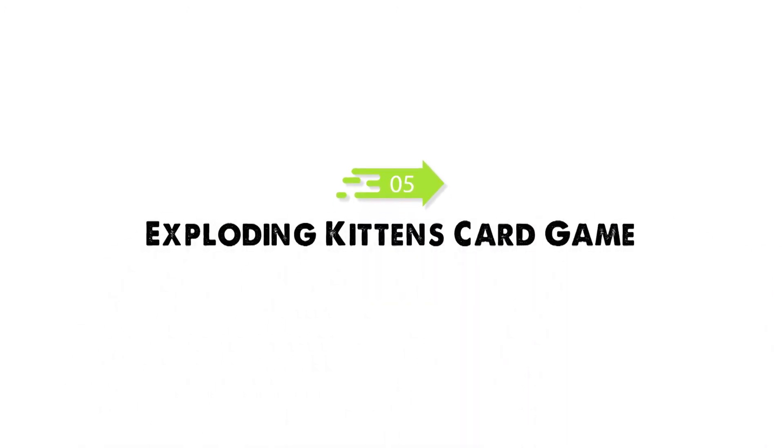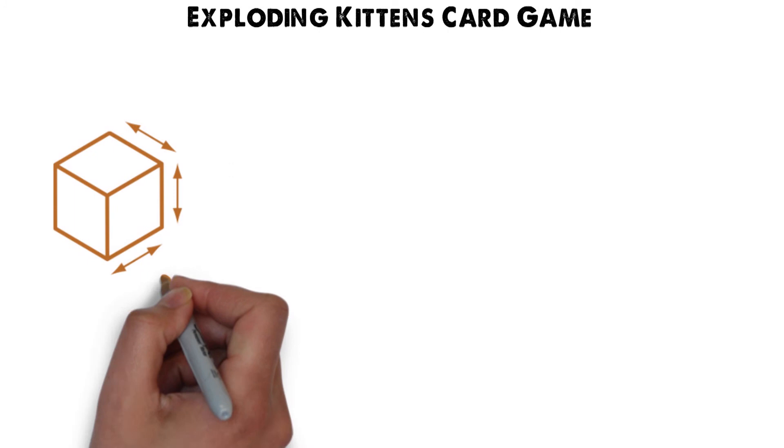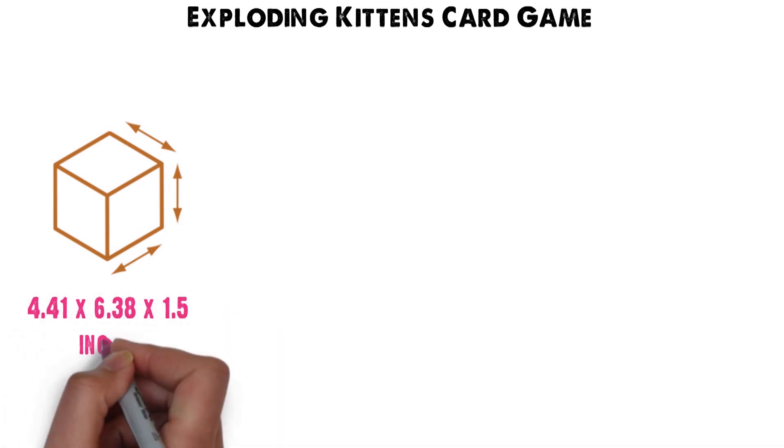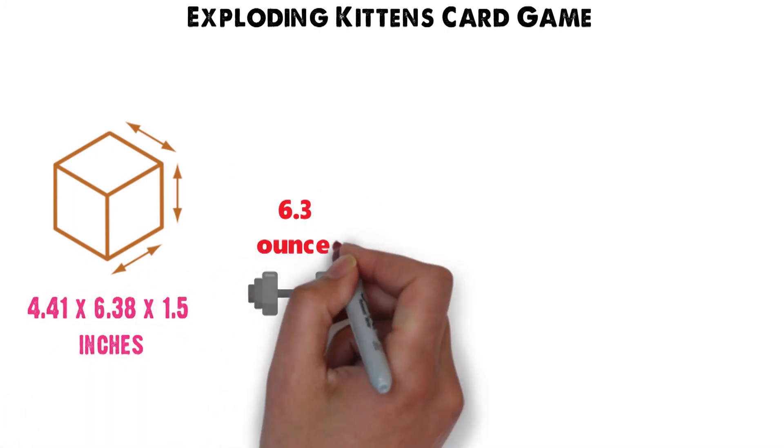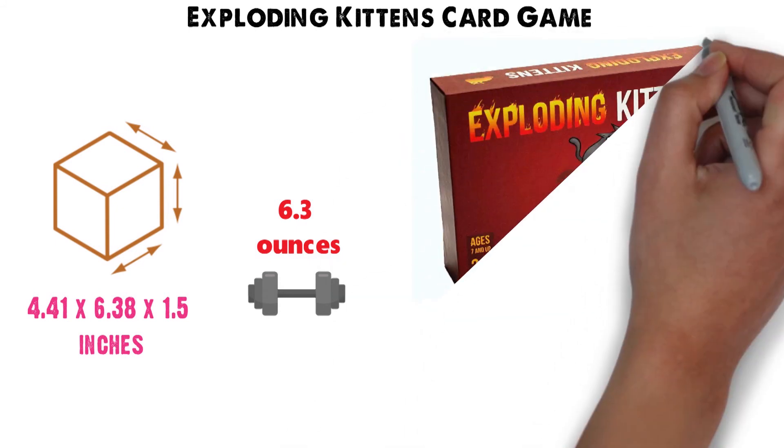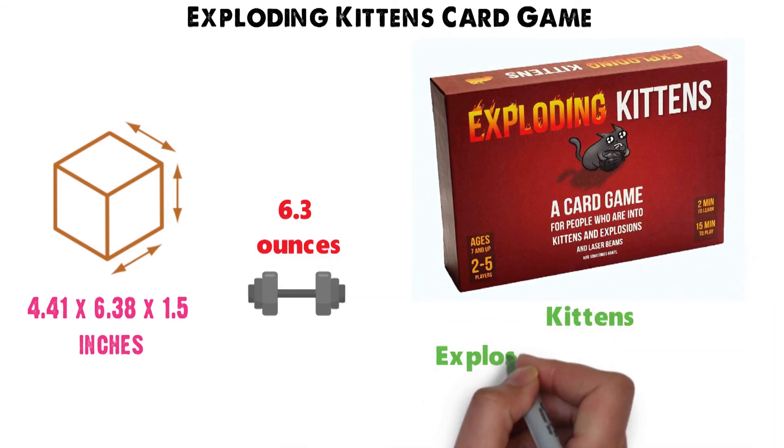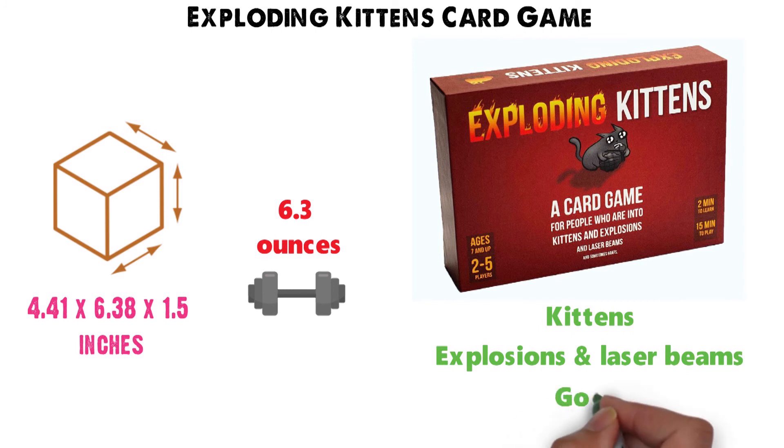At number 5, we have the Exploding Kittens card game. Dimensions of this product are 4.41 x 6.38 x 1.5 inches and it weighs 6.3 ounces. Exploding Kittens is a card game for everyone who likes kittens, explosions, and laser beams, and sometimes goats.